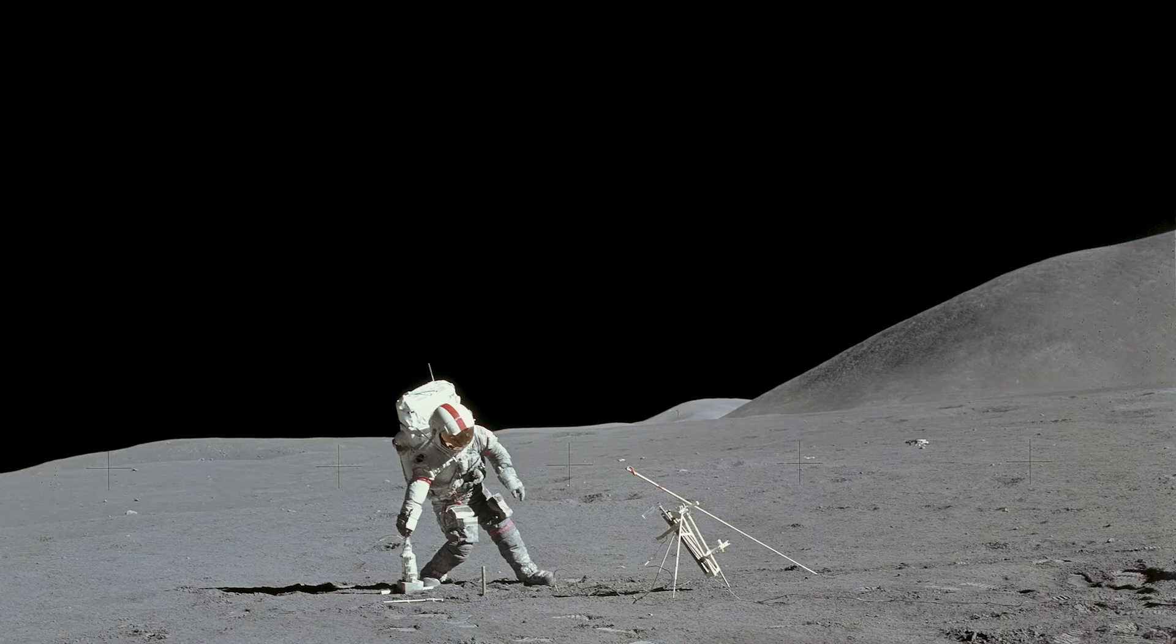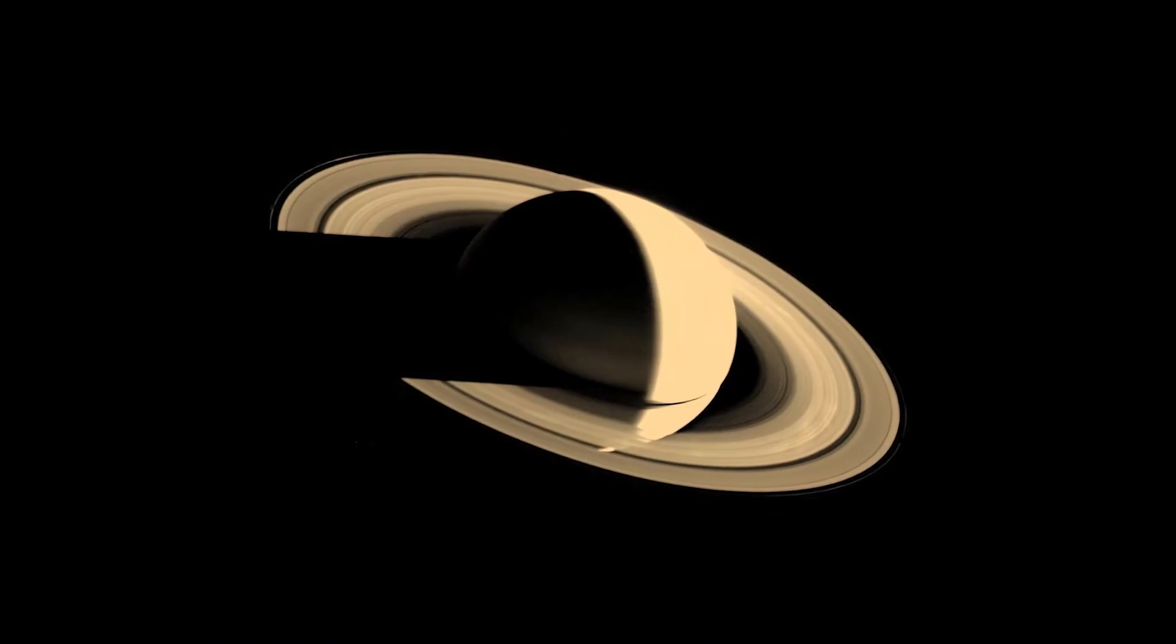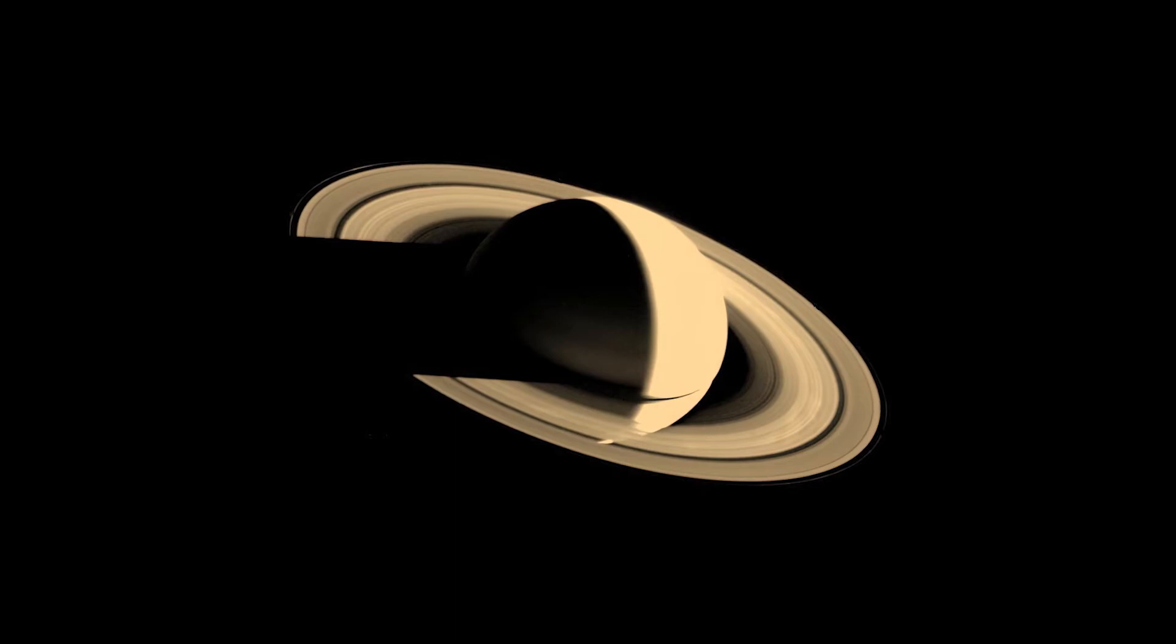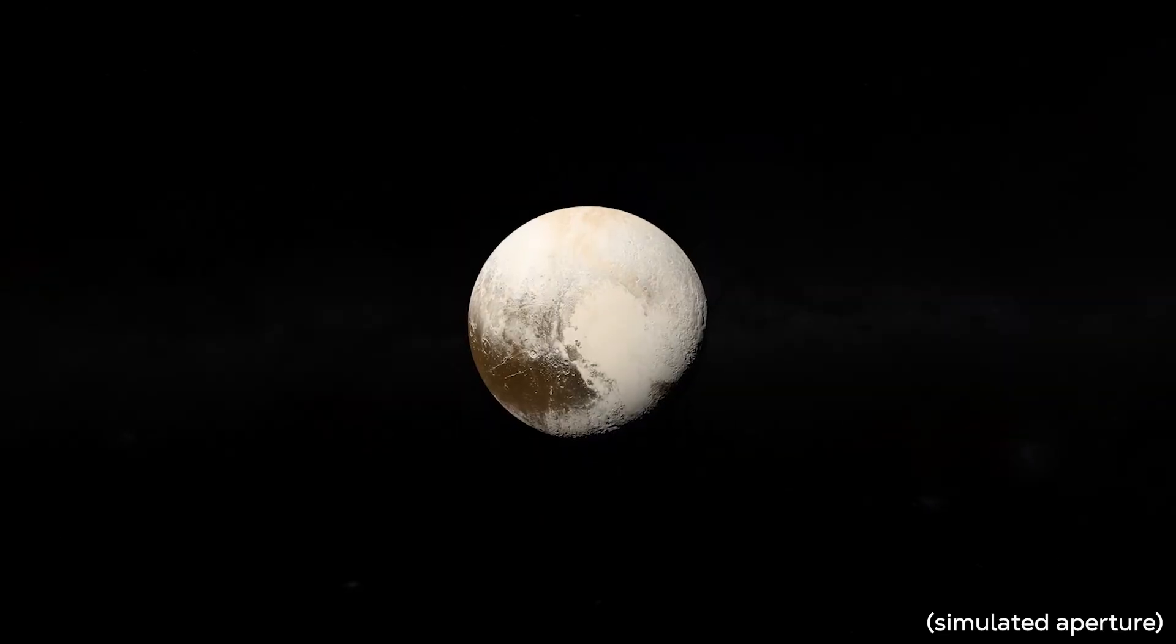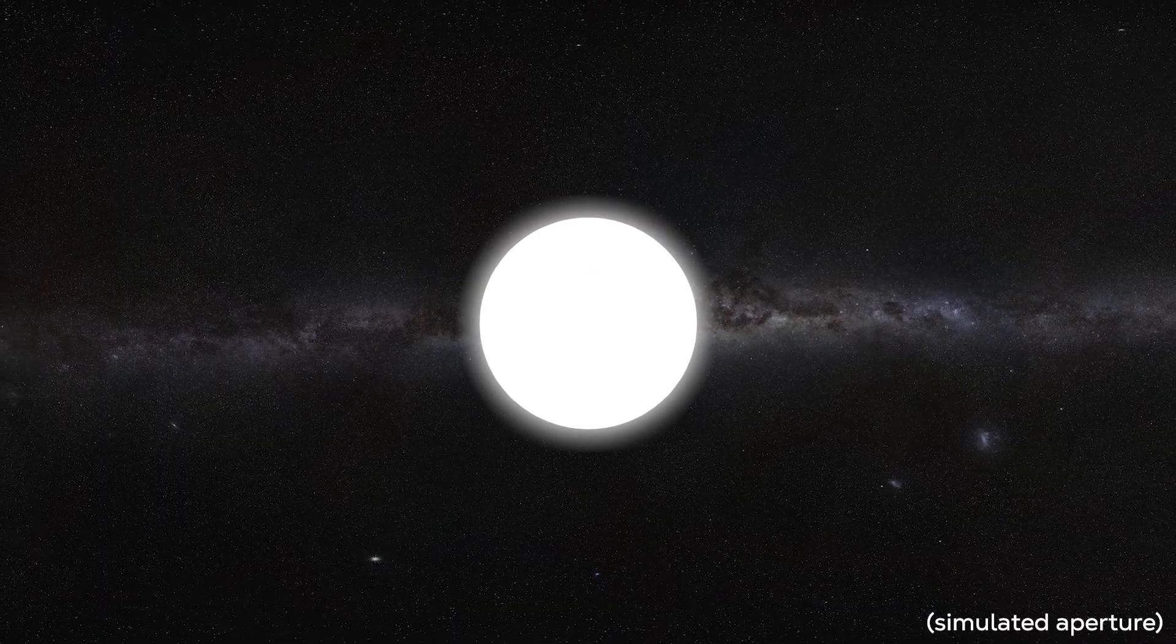This is why pictures of astronauts on the moon, Jupiter's majestic storms, or Saturn's dramatic rings rarely show stars in the background. All of these photos have set their aperture and or exposure times to capture something much brighter than the distant background stars.